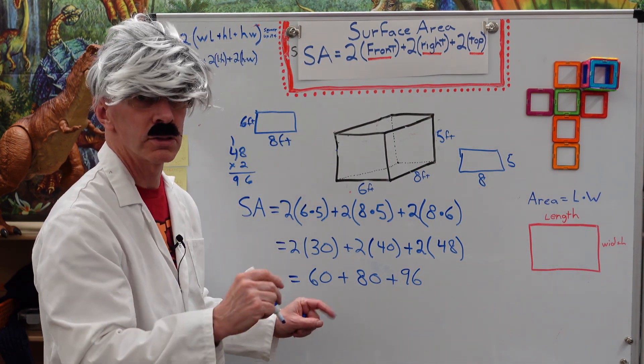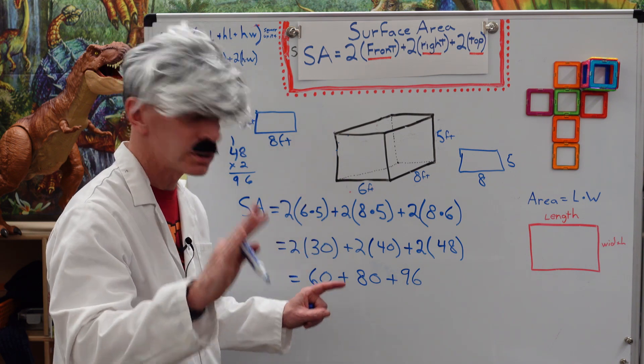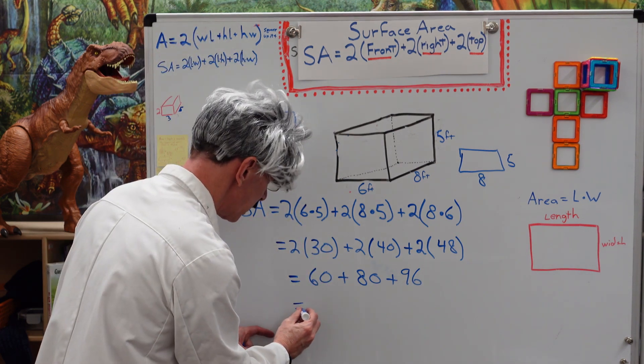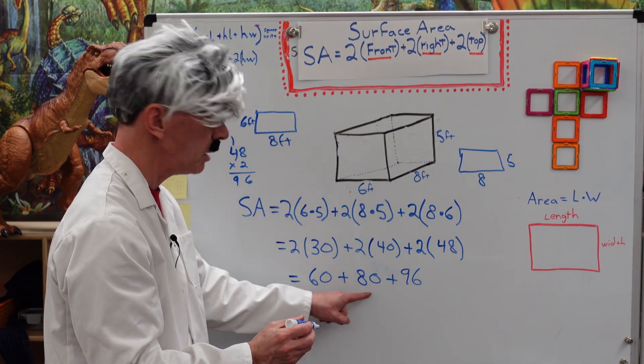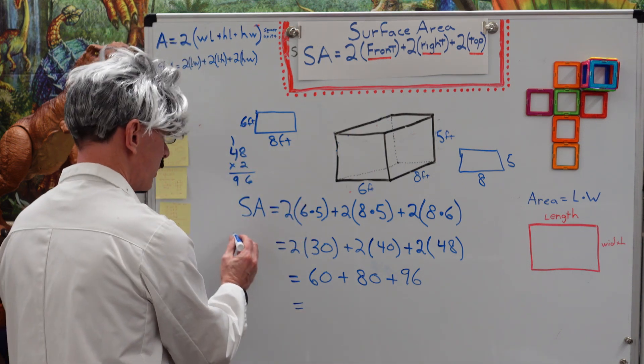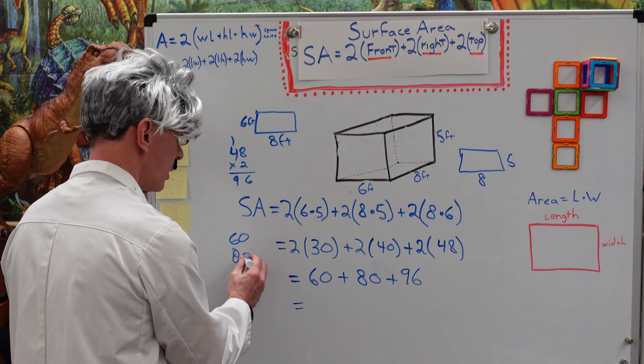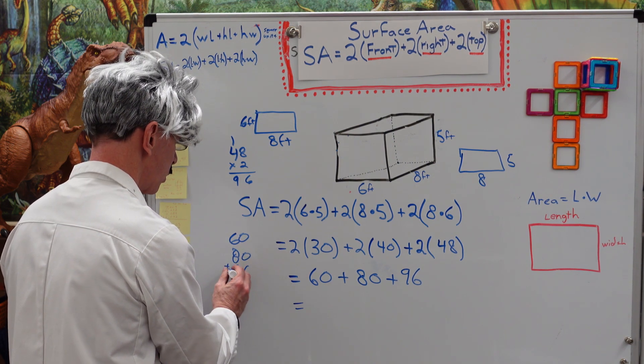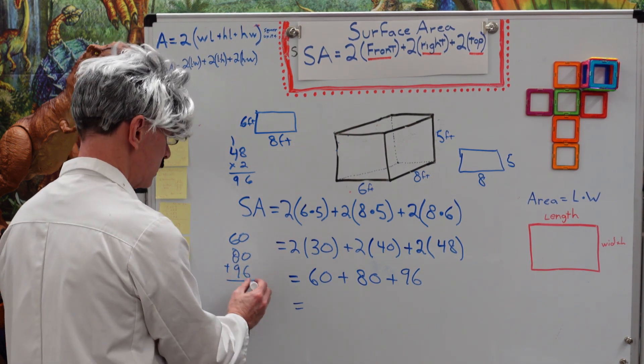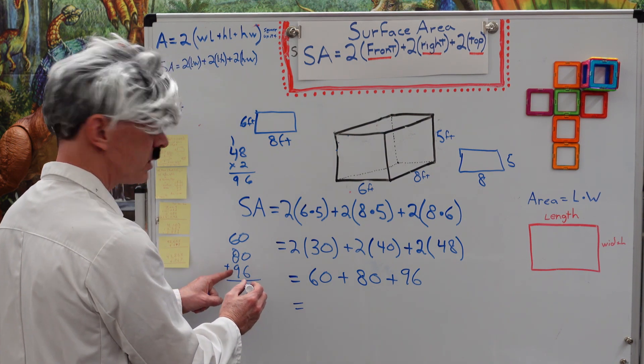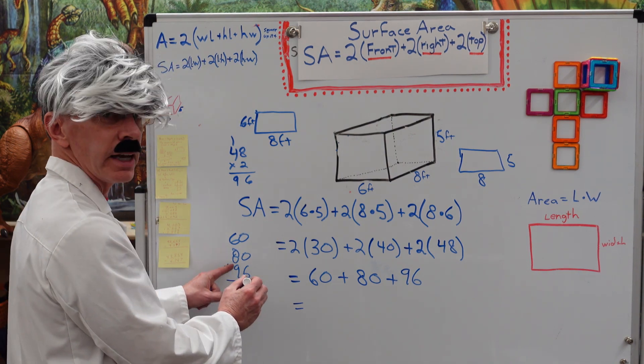Very good. We are almost finished. Stay with me. Thank you very much. So, 60 plus 80 plus 96. We need to add those up. So, we put 60 and 80 and 96. Go ahead and add the 1s. 6. Then, we add the 10s. 9 plus 8 is 17.